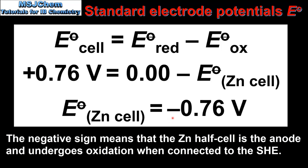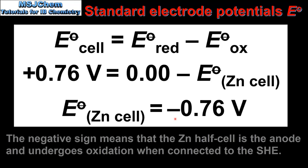The negative sign tells us that the zinc half cell will undergo oxidation when connected to the standard hydrogen electrode — in other words, it will be the anode.